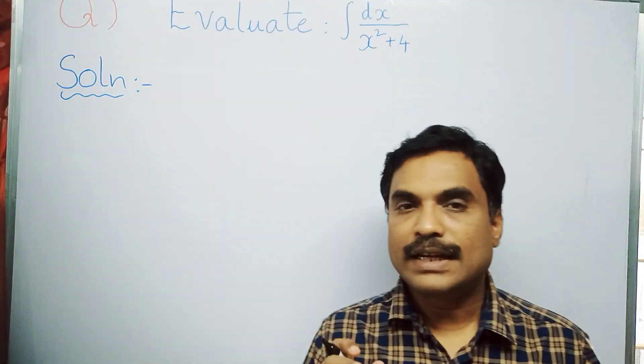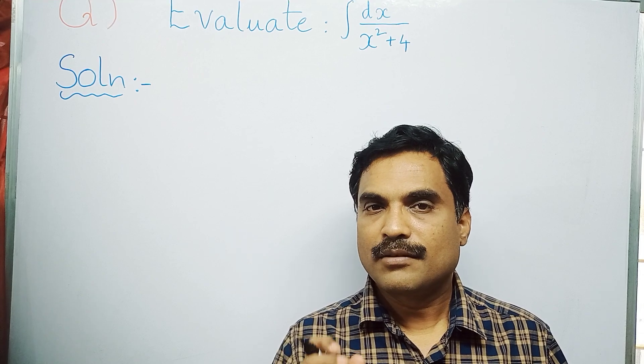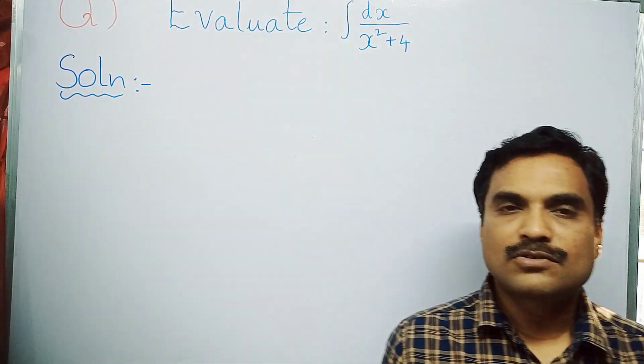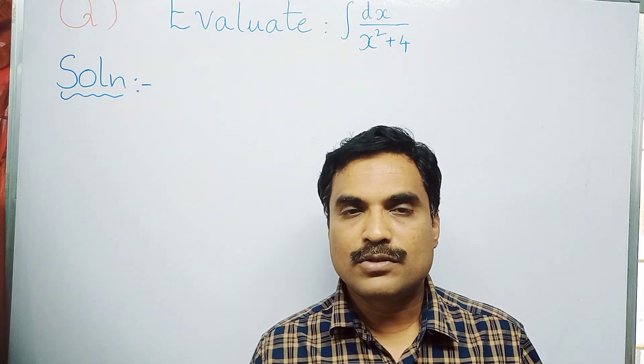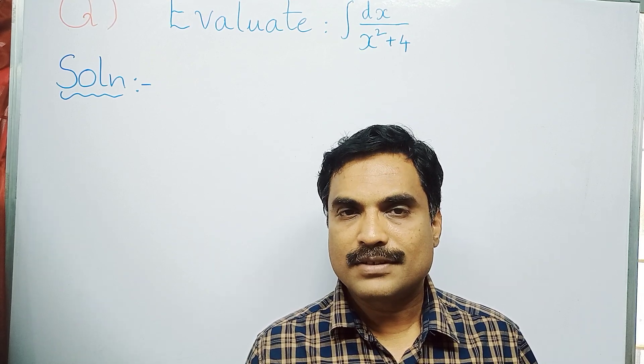You can write this integral as integral dx by x squared plus 2 squared. 4 can be written as 2 squared. And this can be solved by using the formula: integral dx by x squared plus a squared.